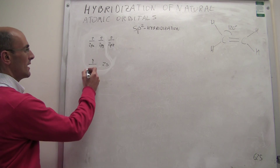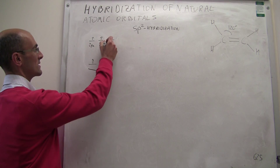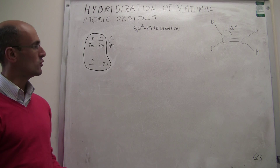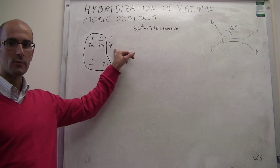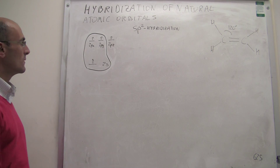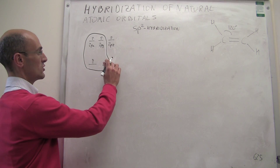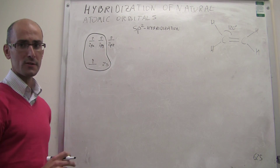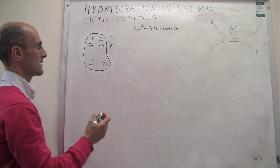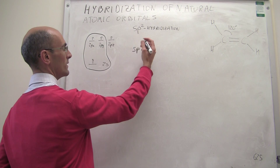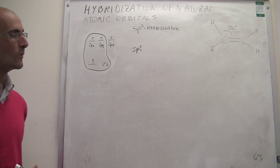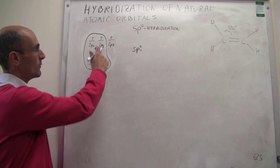Distinctly from sp3 hybridization, what we're actually going to do here is mix the 2s orbital with only two of the 2p orbitals, and the 2pz orbital is going to be left unhybridized — left in its natural state. Since you're mixing three atomic orbitals, you're going to get three hybrid orbitals. What we can actually do here is write the linear combinations of these atomic orbitals that give rise to the hybrid sp2 orbitals.